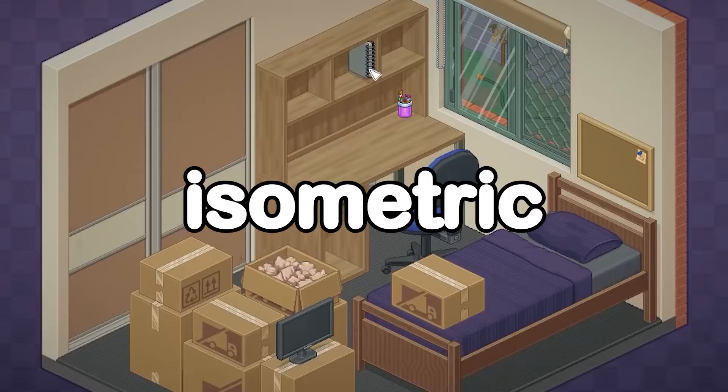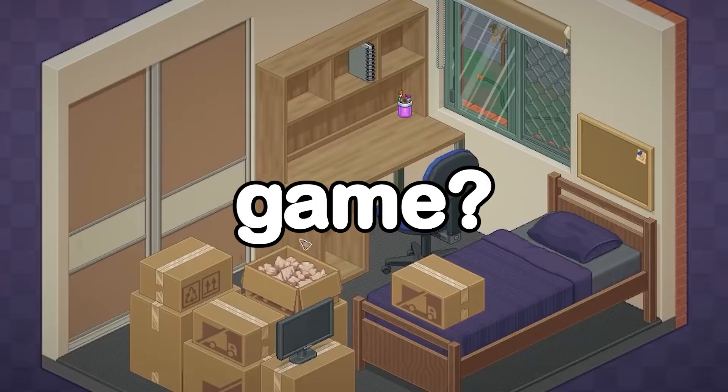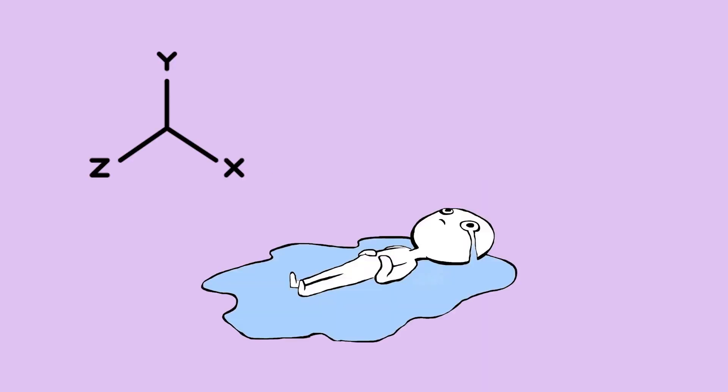So you want to make an isometric game? Okay, here are your options: mess up the coordinates, cry about animations, replace all characters with cubes.